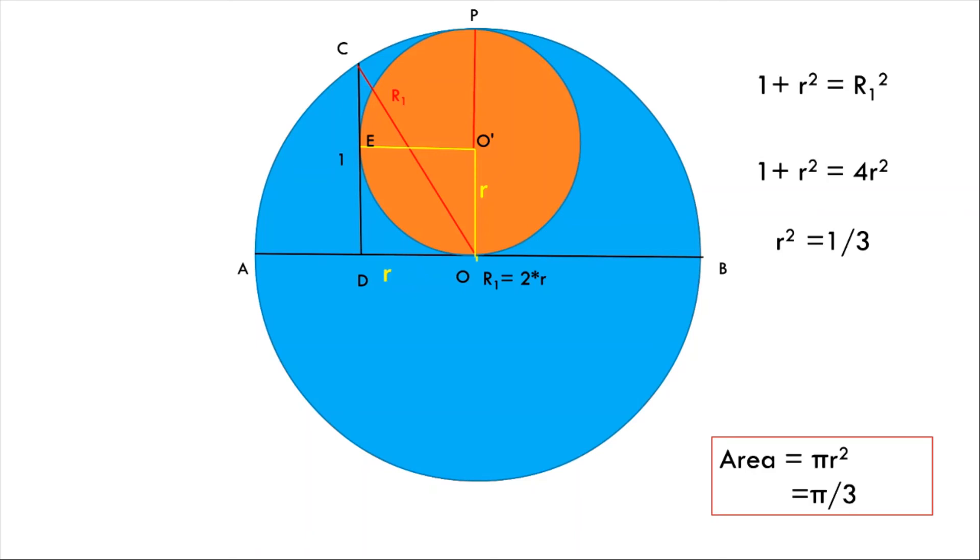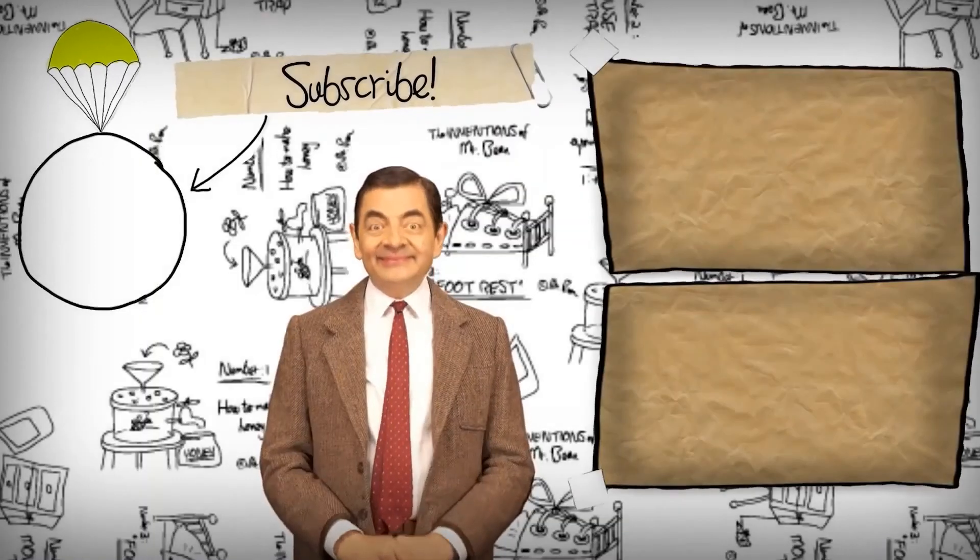So the area is πr², which equals π/3. Thank you.